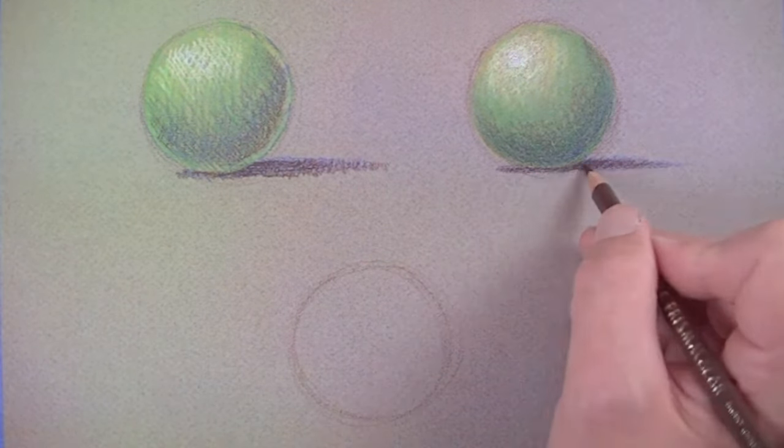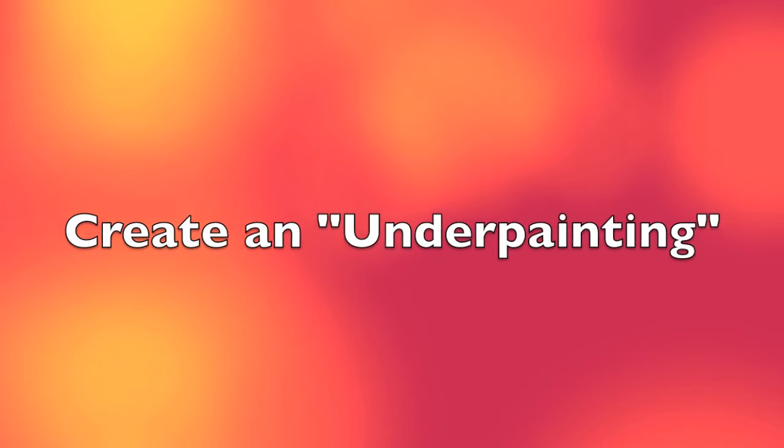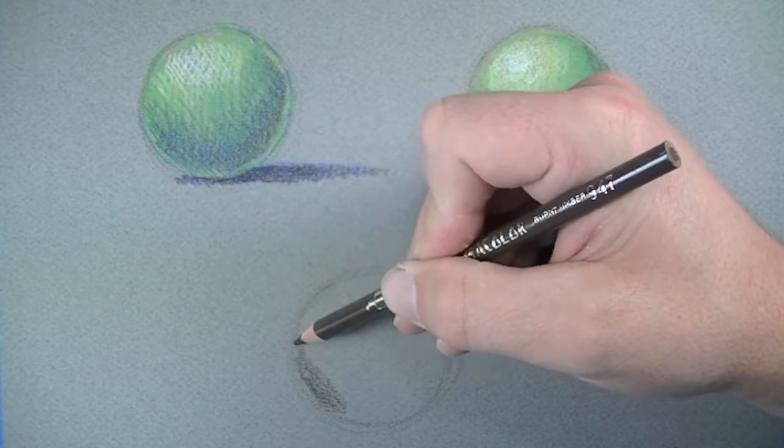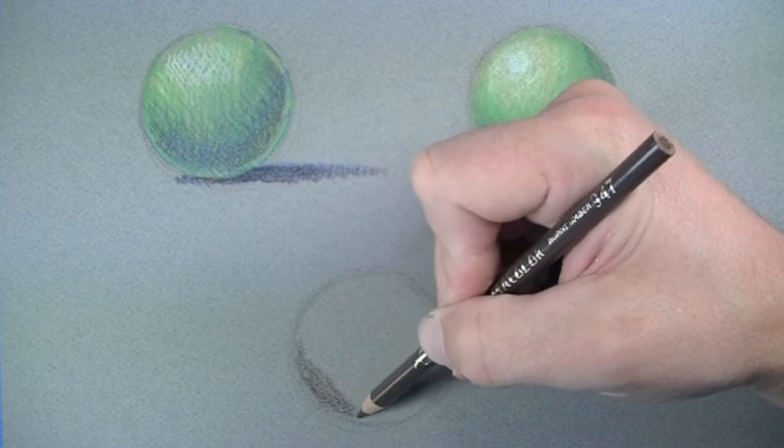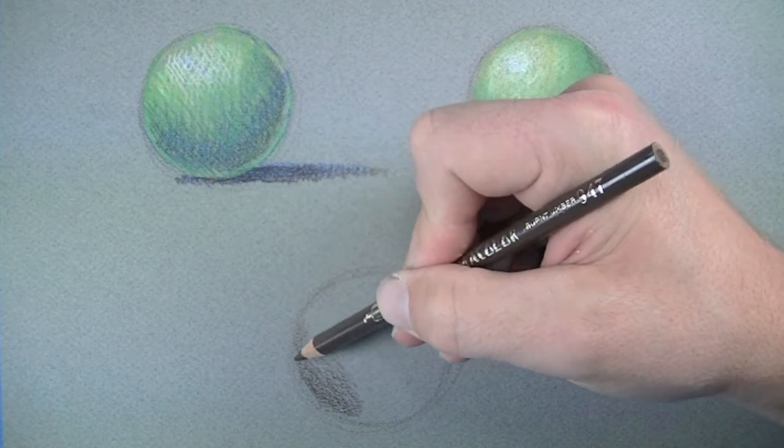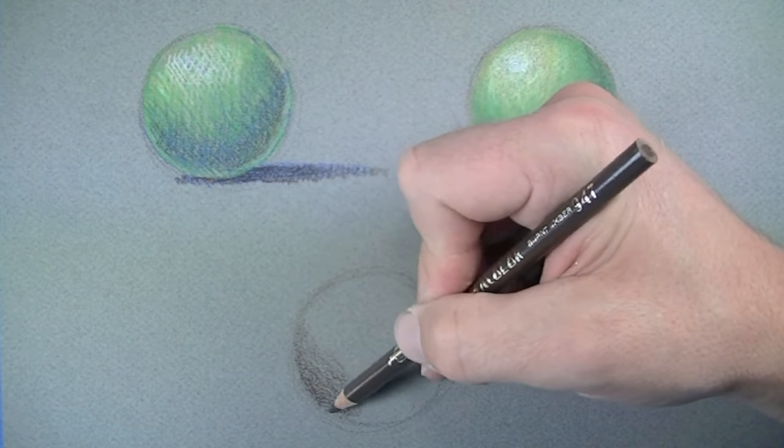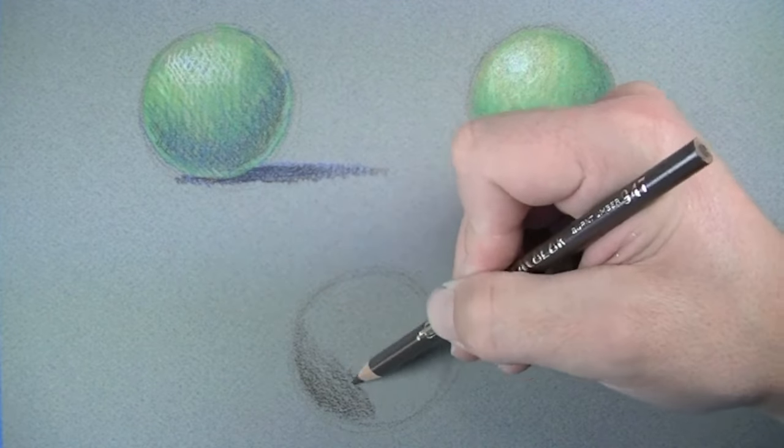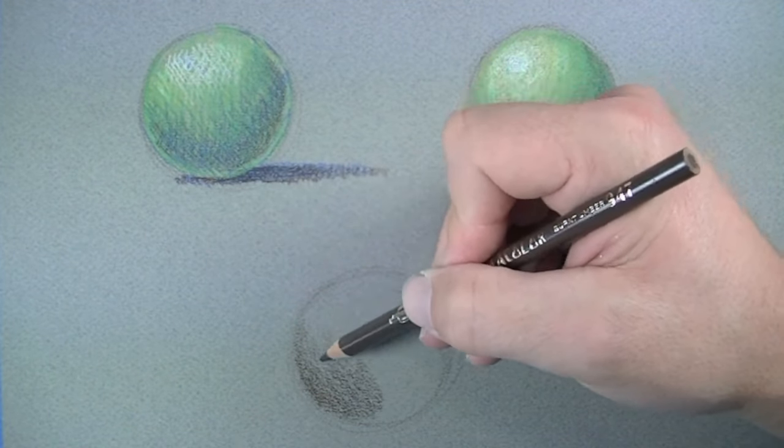Another way to use the colored pencils is to create somewhat of an underpainting. In this case, we'll begin by establishing just the values that exist on the sphere. In this example, I'll establish the values with a dark brown. With this technique, only focus on the values in the beginning stages.